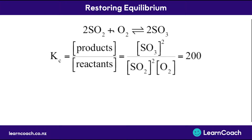For this equation we put the concentration of the products — that's SO3 — to the power of the number of moles, divided by the concentration of the reactants again to the power of the number of moles. In this case we might get a Kc of 200, which means we have 200 times as much product as reactant.